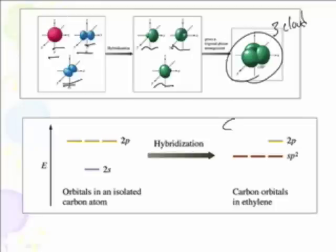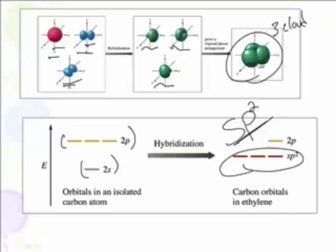And we call this sp2 hybridized. And notice, we have the three 2p orbitals, which we talked about, and the 2s orbital, and they turn into three sp2 orbitals, and then the 2p orbital does not change. Nope.